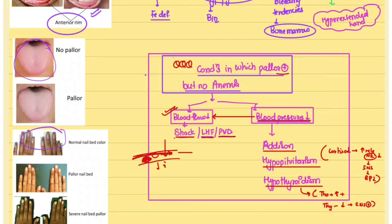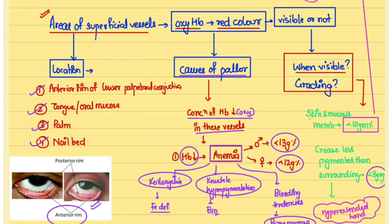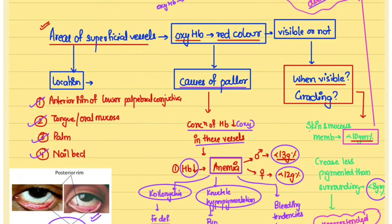Pallor on the skin and mucous membranes is typically only visible when hemoglobin is less than 10 g%. So absent pallor does not always rule out anemia — in the range of 10–12 g% (or 10–13 g% in males), the patient may have anemia but pallor may not yet be visible.